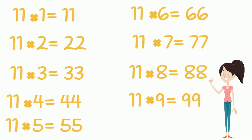11 times 2 equals 22. You write number 2 and repeat the same digit. 11 times 3 is 33. You write number 3 and repeat the same digit, and the same goes on with all the numbers.